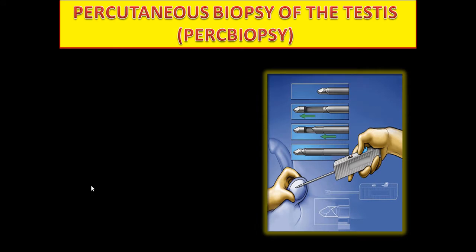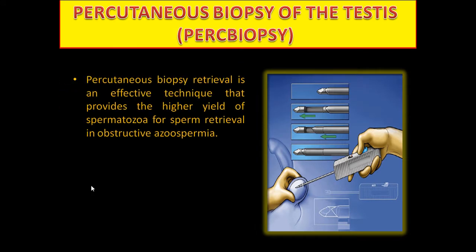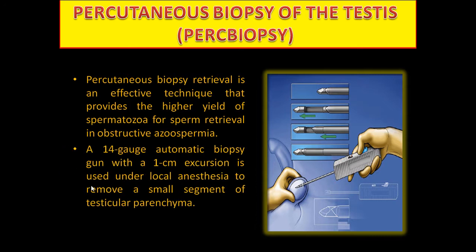Percutaneous biopsy of the testis (Perc biopsy): percutaneous biopsy retrieval is an effective technique that provides a higher yield of spermatozoa for sperm retrieval in obstructive azoospermia. A 14-gauge automatic biopsy gun with a 1cm excursion is used under local anesthesia to remove a small segment of testicular parenchyma.